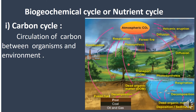Plants and animals decompose — dead organic matter decomposes and releases carbon dioxide back into the atmosphere. Carbon circulates in this way, completing the carbon cycle.